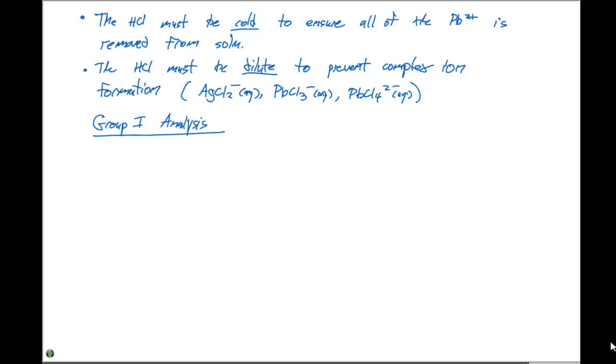So at this point when we added our HCl, we have precipitate number one down here which contains silver chloride and lead chloride, and we have solution number one right here which has our group two and our group three cations.